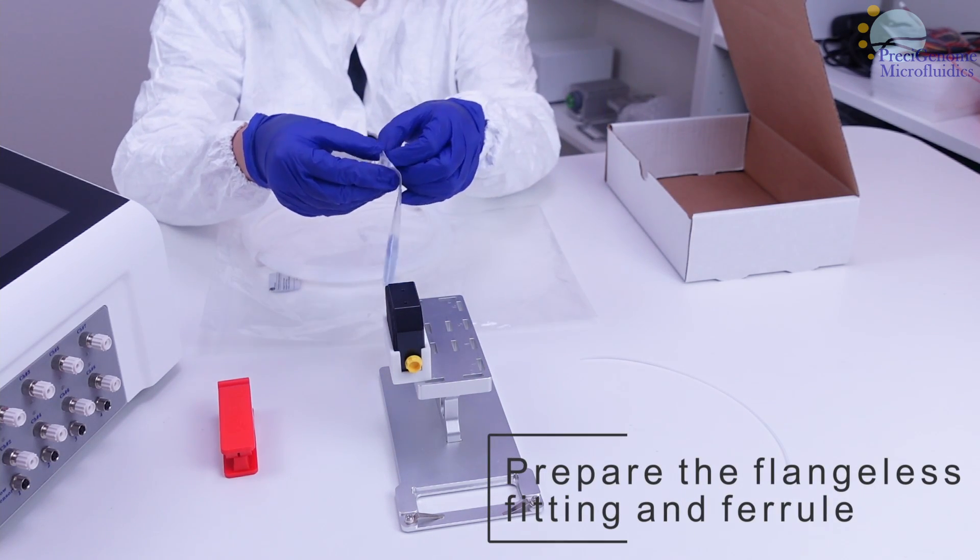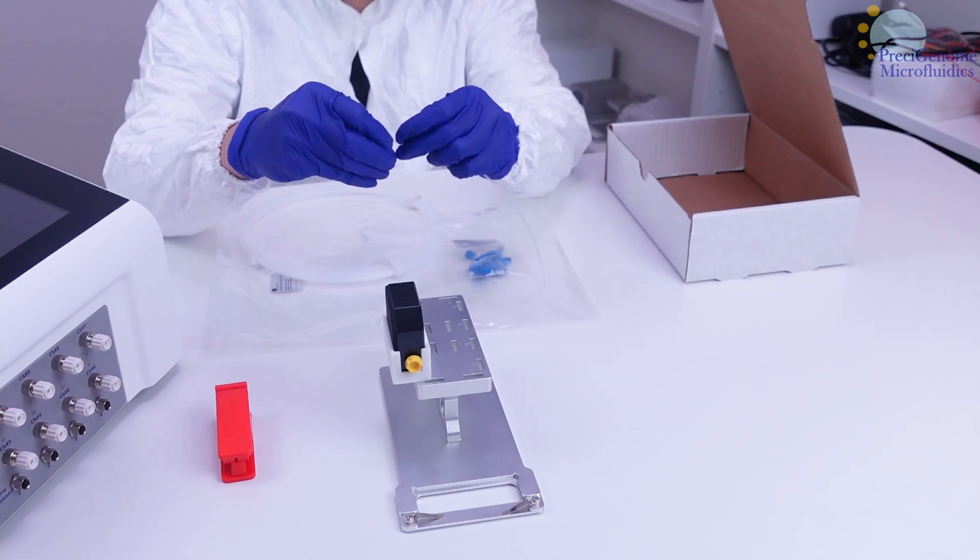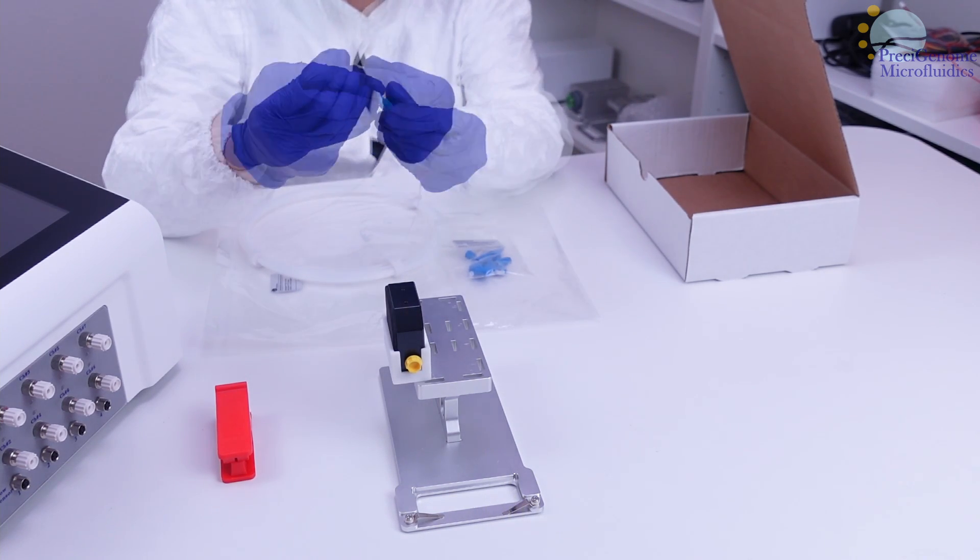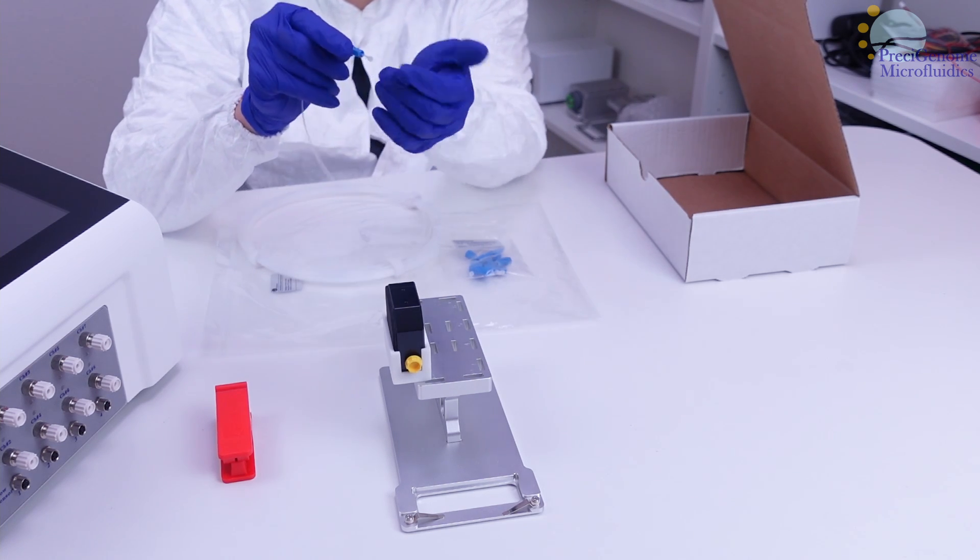Also take out a flangeless fitting and ferrule. Slip both components onto the tubing, and ensure both have their narrow ends pointing inwards.